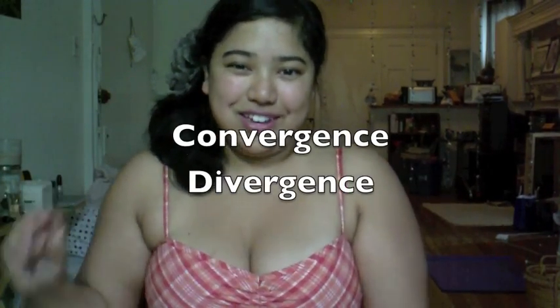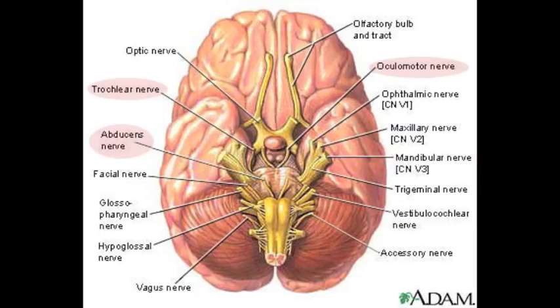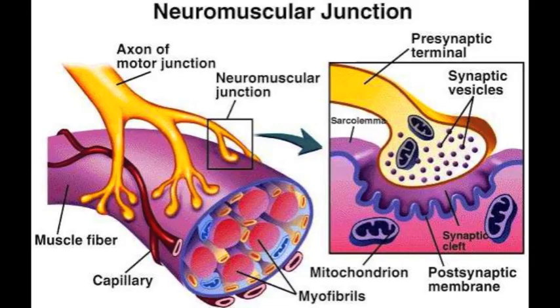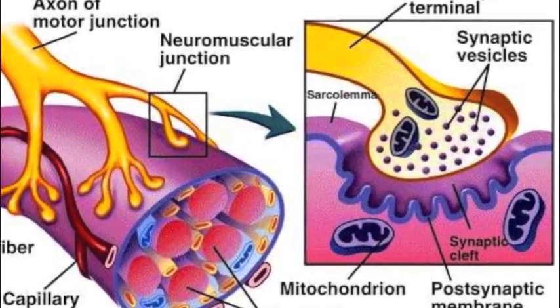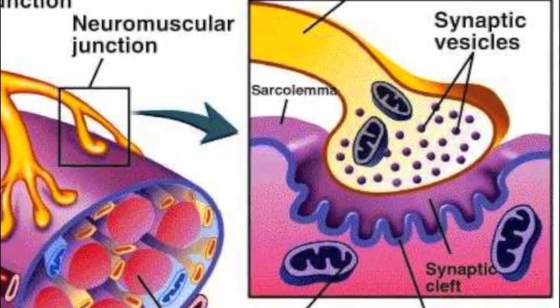When your eyes work together to move towards each other or away from each other, it's called convergence and divergence — we classify it all as vergence. We test these to see if there's any problems with the eye muscles. There are six eye muscles. We also check for problems with the nerves — there are three cranial nerves that innervate the muscles controlling eye movement. A third thing we can check is if there's a problem at the neuromuscular junction — the chemicals that move between the nerve and the muscle.